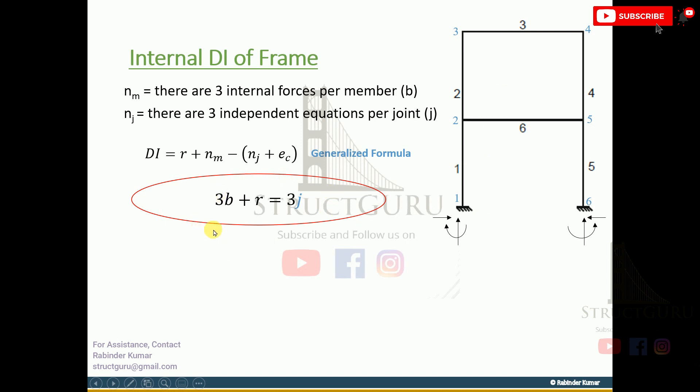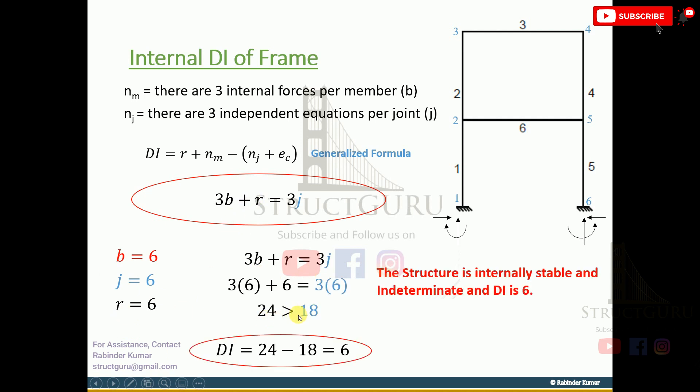Here is an example for frame structure. For frame structure, as we have discussed, we have three member forces and three joint forces. Count the members: we have six members. Count the number of joints: we have six joints. Number of reactions: three on this side, three on this side, so six. Put these values in this formula and it is 24 is greater than 18. The structure is internally stable and indeterminate, and degree of indeterminacy is six.